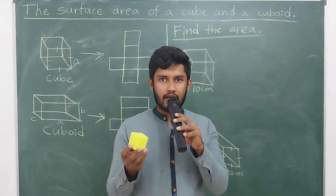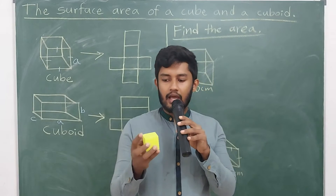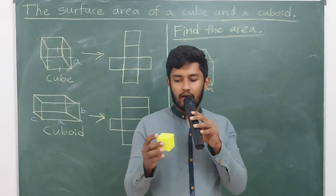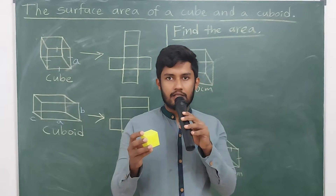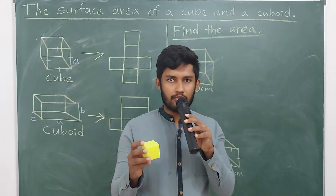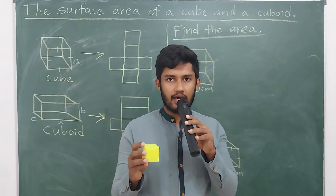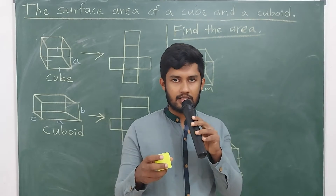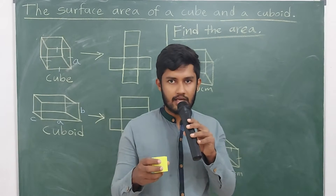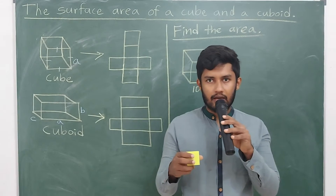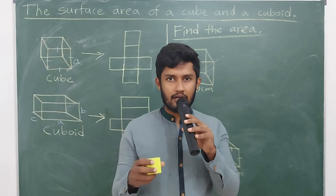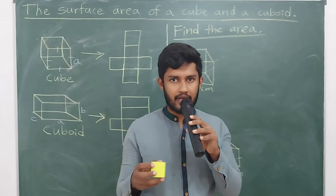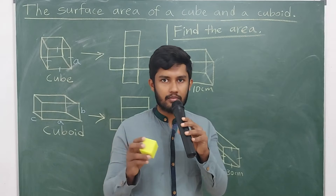A cube has six faces, eight vertices, and twelve edges. We must have the ability to find the surface area of a cube. To do that, we find the area of one face and multiply it by the number of faces — which is six.